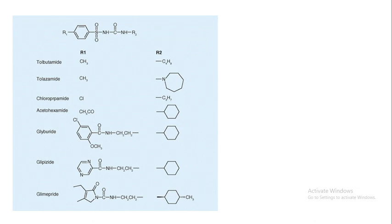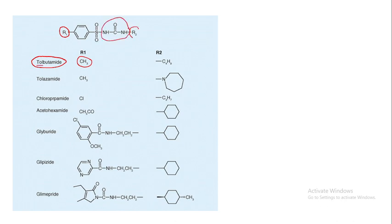Looking at the structure of tolbutamide: the R1 group is a benzene ring with a methyl substituent, which makes it a toluene group. Then the urea moiety contains the R2 group, which is a butyl chain. That combination is what gives us tolbutamide.